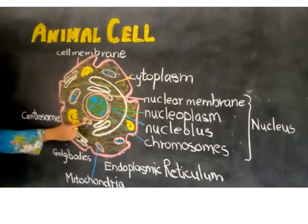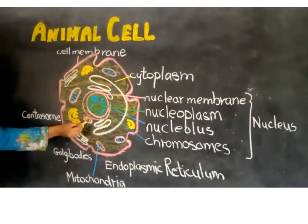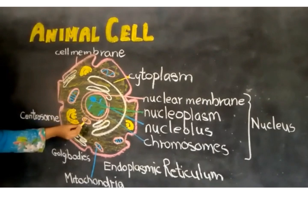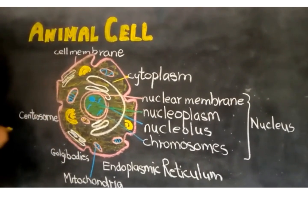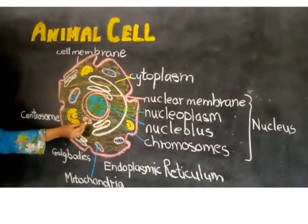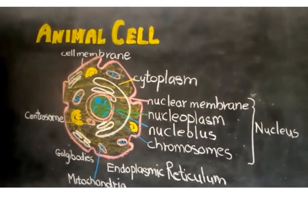The centrosome is a star-like structure located near the nucleus. It is present only in the animal cell. The centrosome is responsible for cell division.